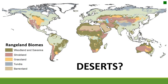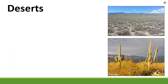Those are the rangeland biomes we're going to talk about. Barren land is not considered rangeland. You might be thinking — where do deserts fit in? We often use deserts to describe these different biomes; we might say we have a desert grassland or desert shrublands. So deserts definitely fit into these different areas, but they're usually descriptors of one of these biomes rather than a separate biome.